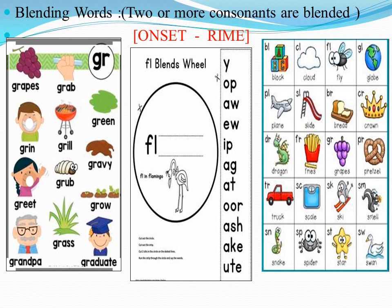Now, GR as the onset — that is the initial sound. That is the finishing sound — that is the rhyme. GR plus the rime is the blending word. Let me read the FL blends wheel. FL-Y: fly. FL-OP: flop. FL-A: fla. FL-EW: flew. FL-IP: flip. FL-AG: flag. FL-AT: flat. Flash.